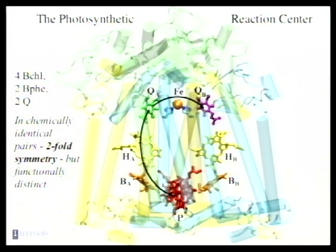So we have the ideal situation where we can say, what is the difference between the environment of this pheophytin and that pheophytin, which makes this one active and this one not active? Or in the case of the majority of the work that we carry out, these two quinones, where although they are chemically identical, they're both ubiquinone, the same as found in mitochondria, they are chemically identical and yet functionally quite distinct.